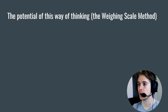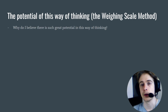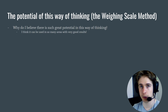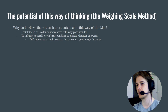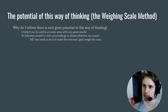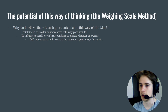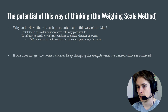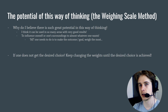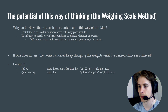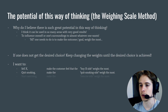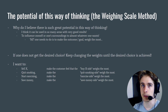So the potential of this way of thinking — the weighing scale method. Why do I believe there is such great potential in this way of thinking? I think it can be used in many areas with good results. It can be used to influence oneself or one's surroundings to almost whatever one wants — I say 'almost' because it sounds easy but it's not that easy, though the idea is simple. All one needs to do is make the desired outcome weigh the most. If one does not get the desired choice, keep changing the weights until the desired choice is achieved. I want to sell X — make the customer feel the buy-X side weighs the most. Quit smoking — make the quit-smoking side weigh the most. Start exercising — make the exercise side weigh the most. Save money — make the save-money side weigh the most, and so on.